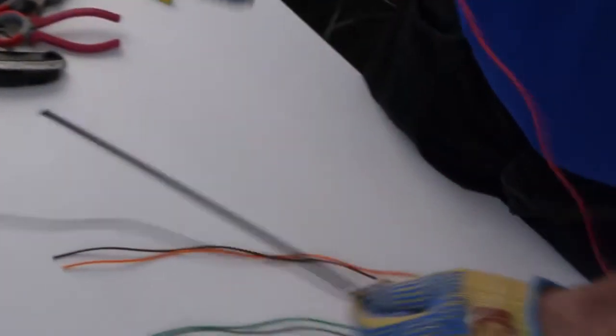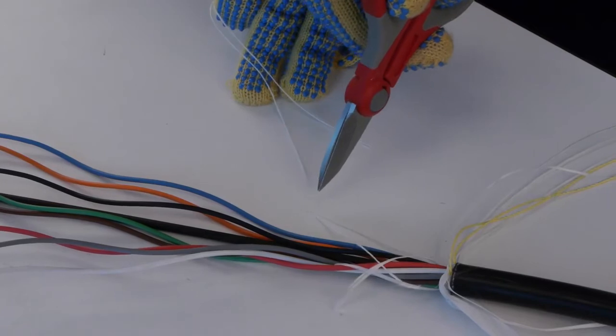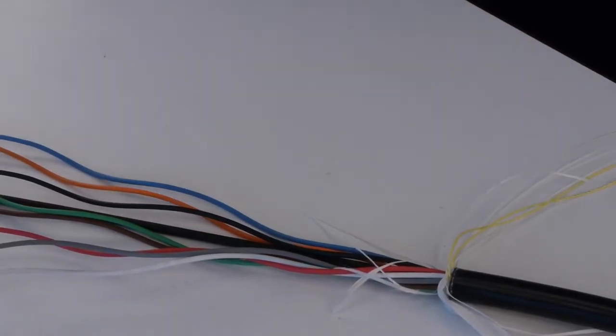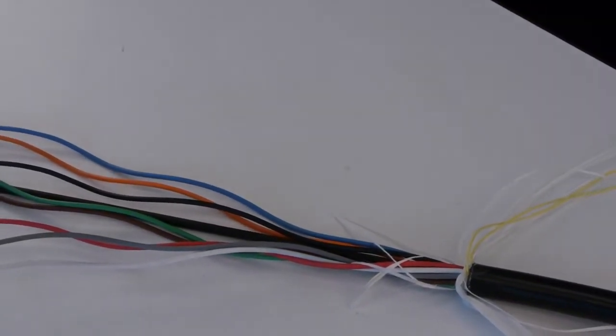Carefully separate the buffer tubes from the core one at a time. Be careful not to kink the tubes during handling. If the tubes are covered with flooding gel, clean them with the appropriate gel cleaner.